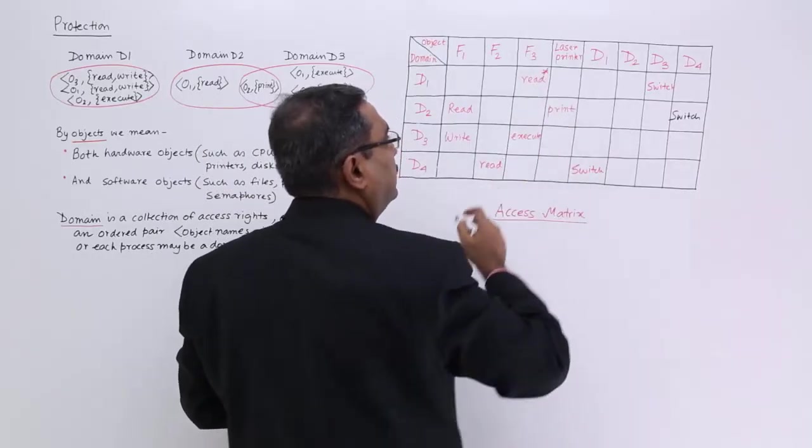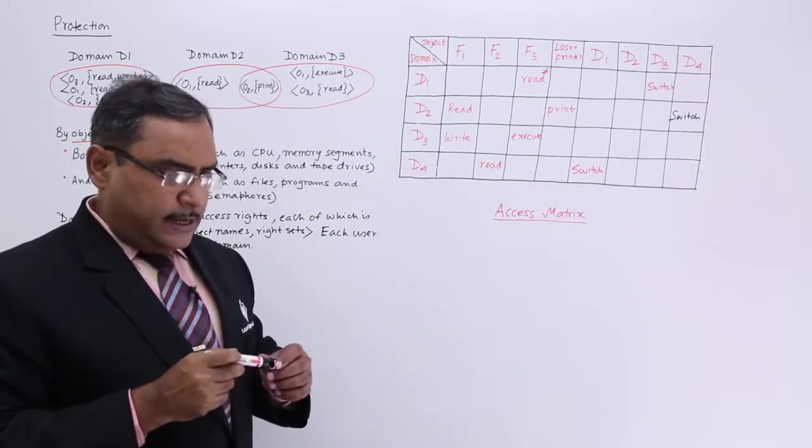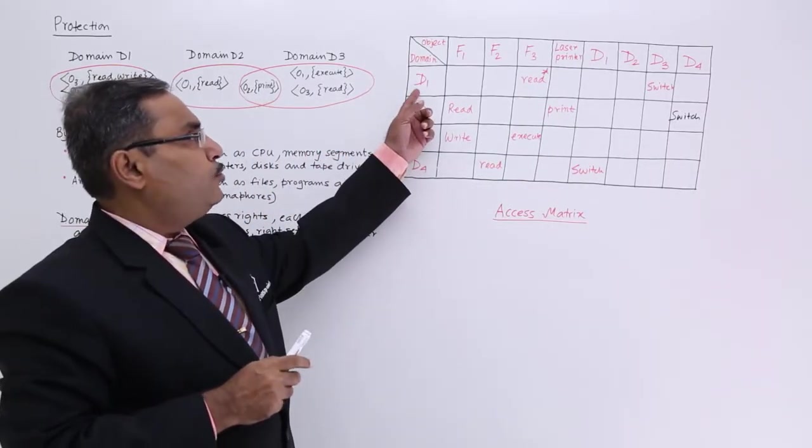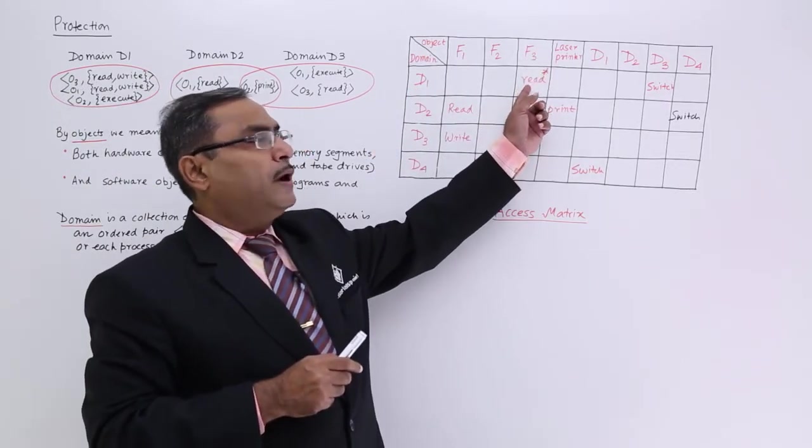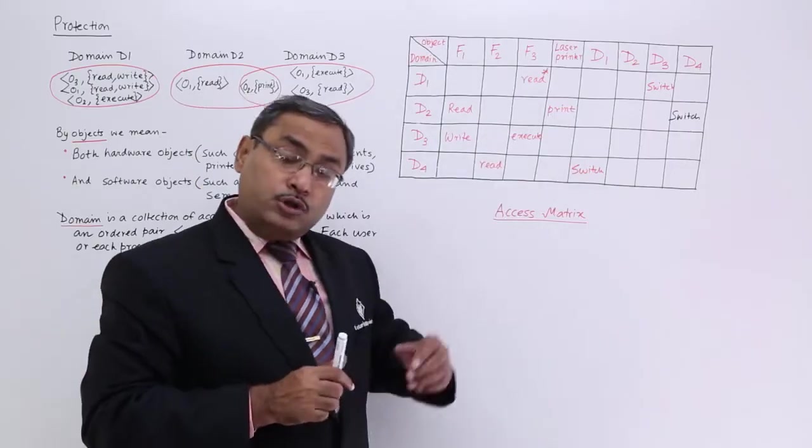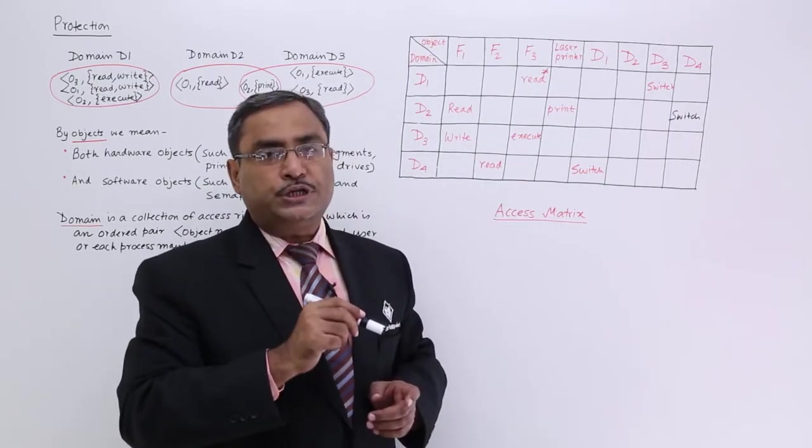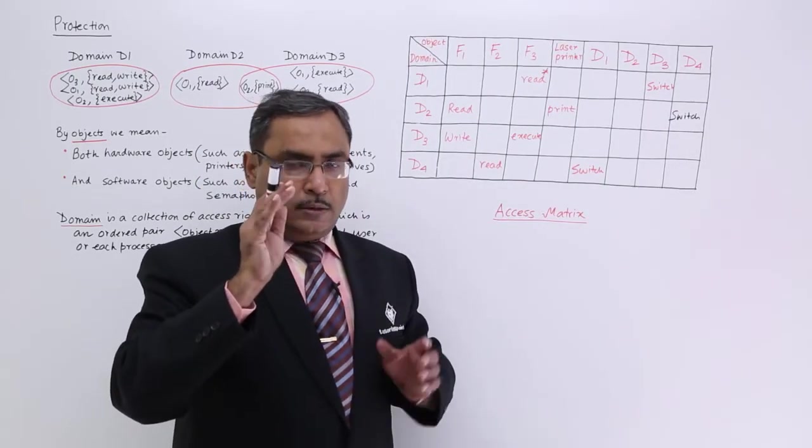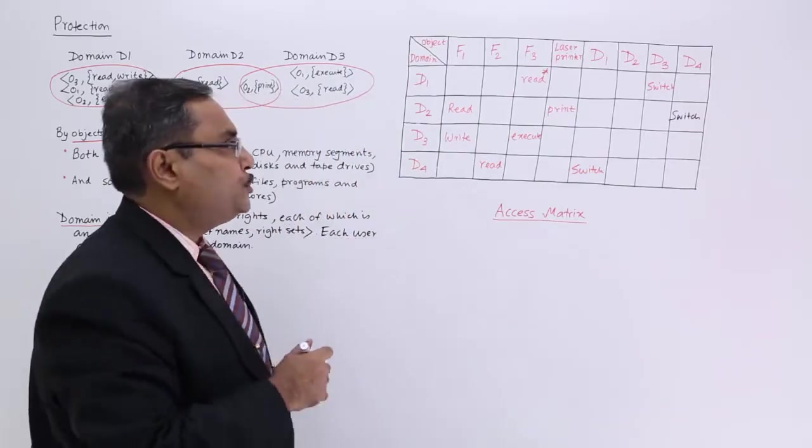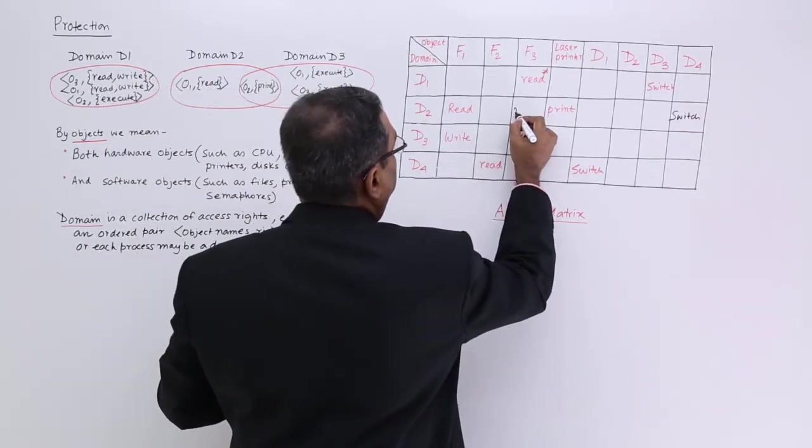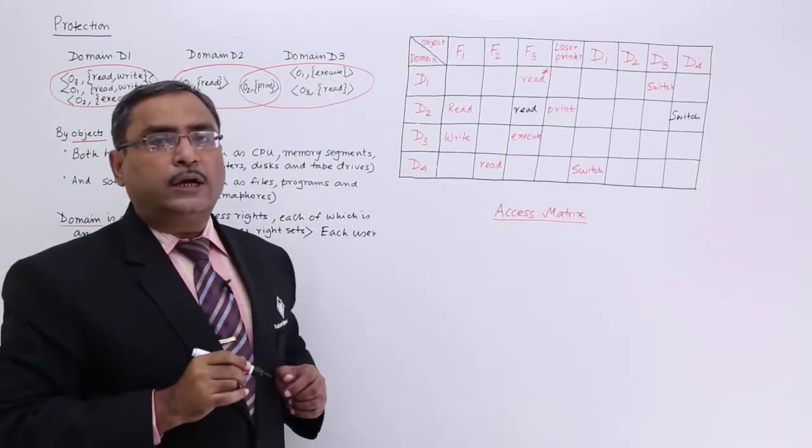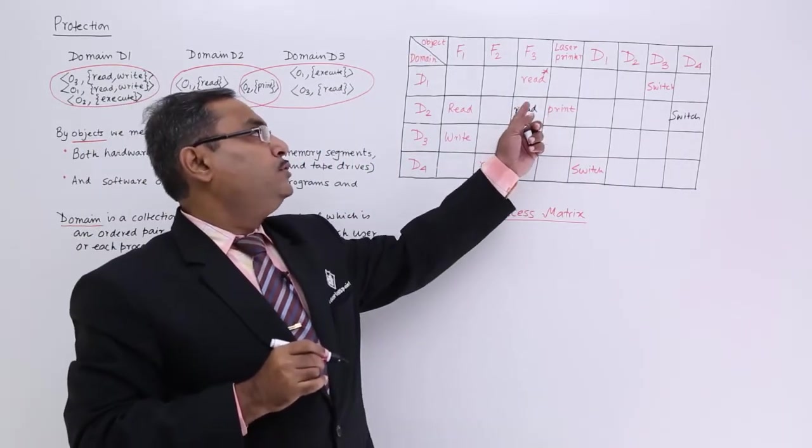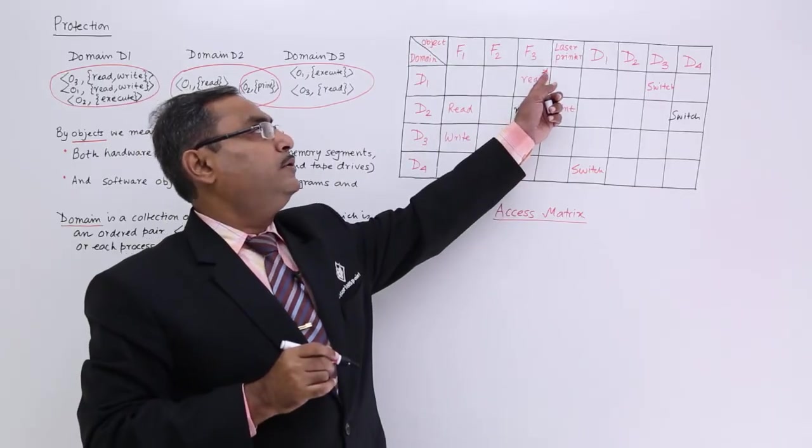And what about this star? This star indicates that if you are in this particular domain D1 on this particular object F3, you can perform the read operation and also you can copy this read operation you are having that power to copy this read operation to other domain. So, I can put it here like this. So, I have done the copy of this read permission to the other domain because I am having this particular permission.